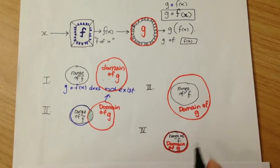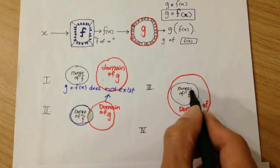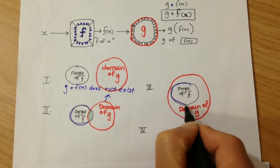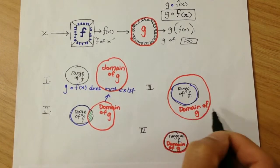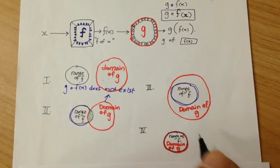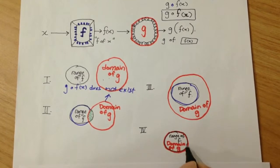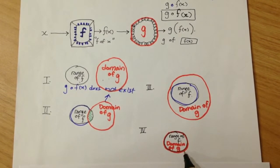So what exists means is that the range of f must be completely inside the domain of g, or the range of f and the domain of g have the same size.